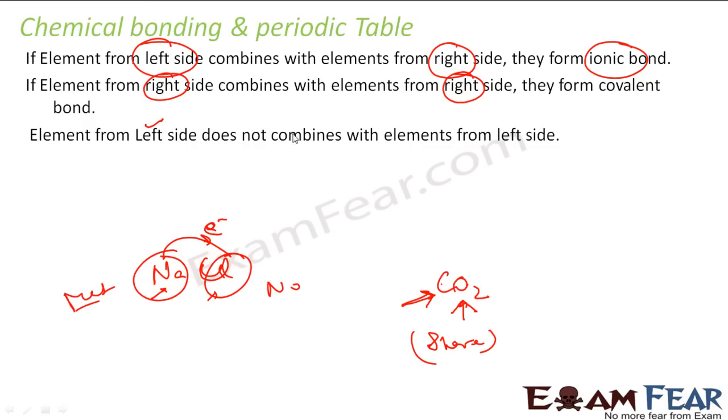And generally the element on the left, they don't combine. The element on the left, left and left, they don't combine. This is the kind of observation we got from periodic table. Left combines with right to form ionic bond. Right with right to form covalent and left doesn't combine with left.